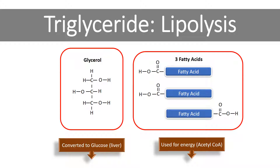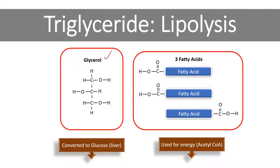Now we've broken that triglyceride molecule down in a process called lipolysis. Lipolysis is just fat breakdown — the first step in fat burning. We break the molecule down into glycerol, which is sent to the liver to be converted to glucose. So you can actually make glucose from fat using the glycerol portion. The other portion — the three fatty acids — are used for energy. Those fatty acids are chopped up into two-carbon units that are converted to something called acetyl-CoA.